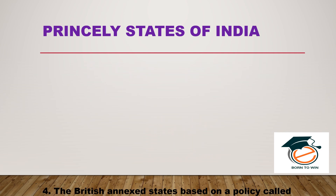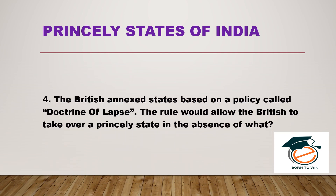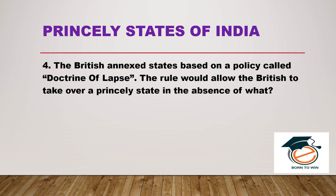The British annexed states based on a policy called the Doctrine of Lapse. This rule would allow the British to take over a princely state in the absence of a male heir.